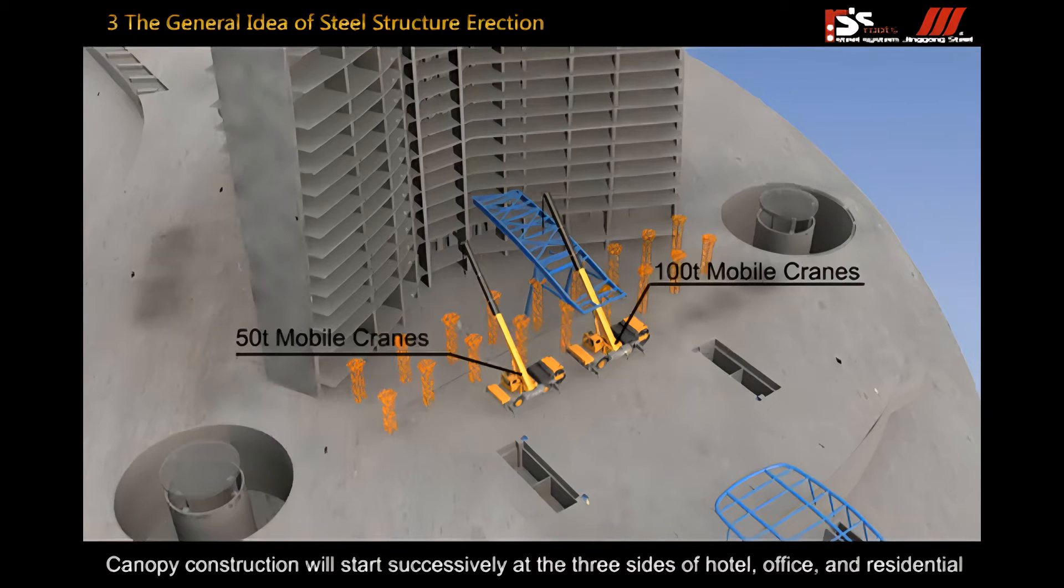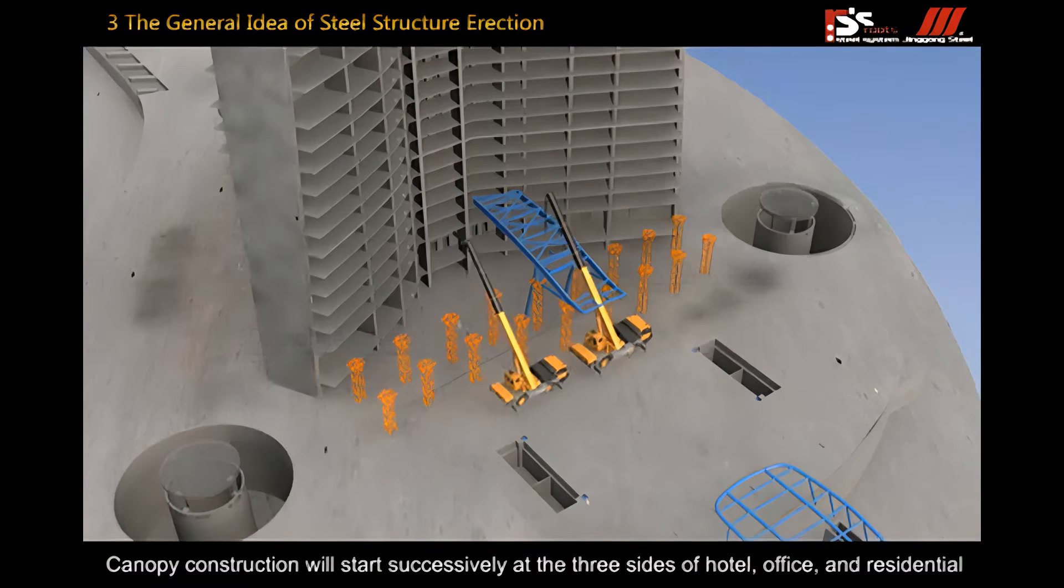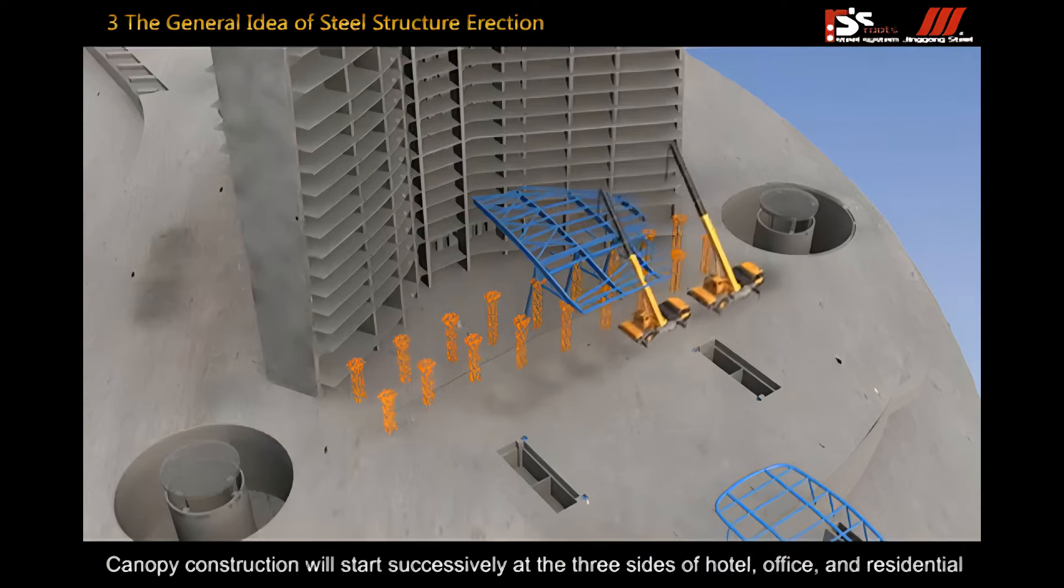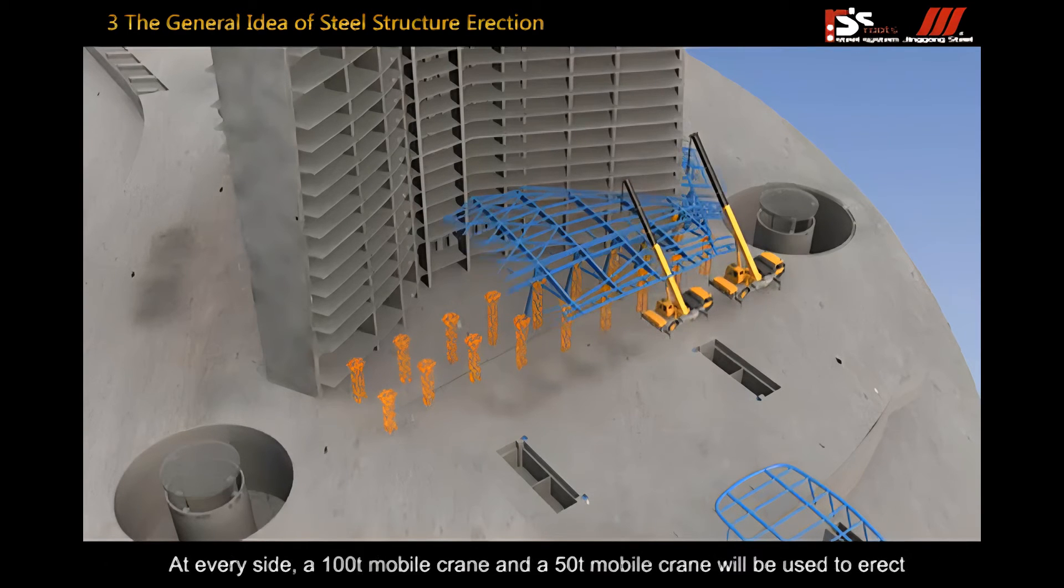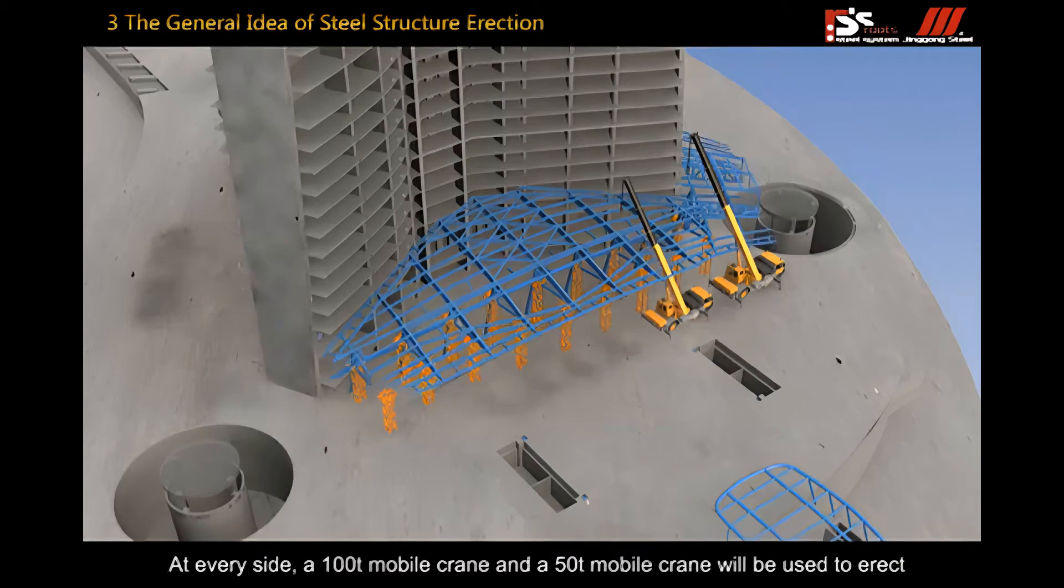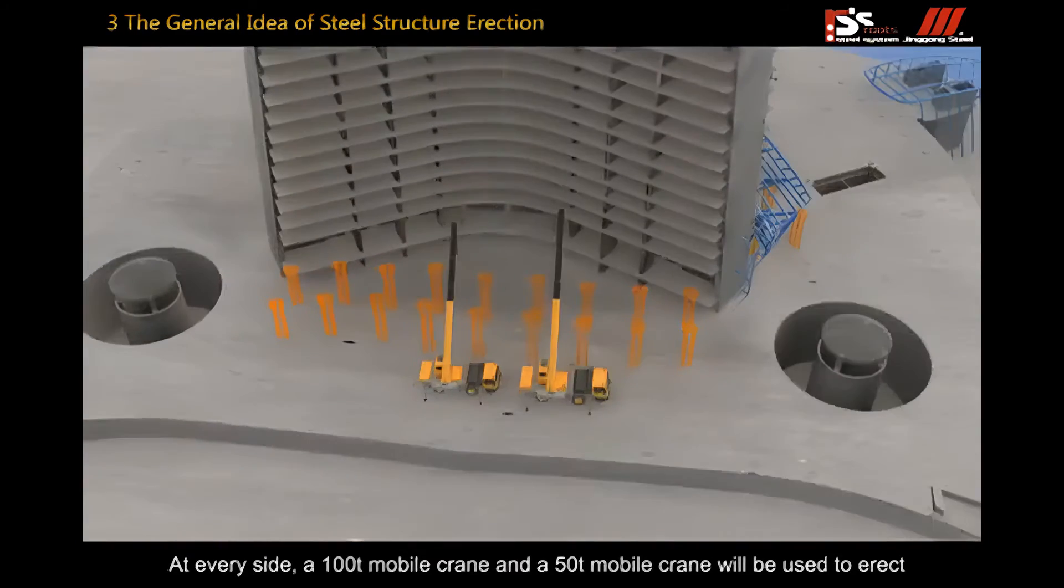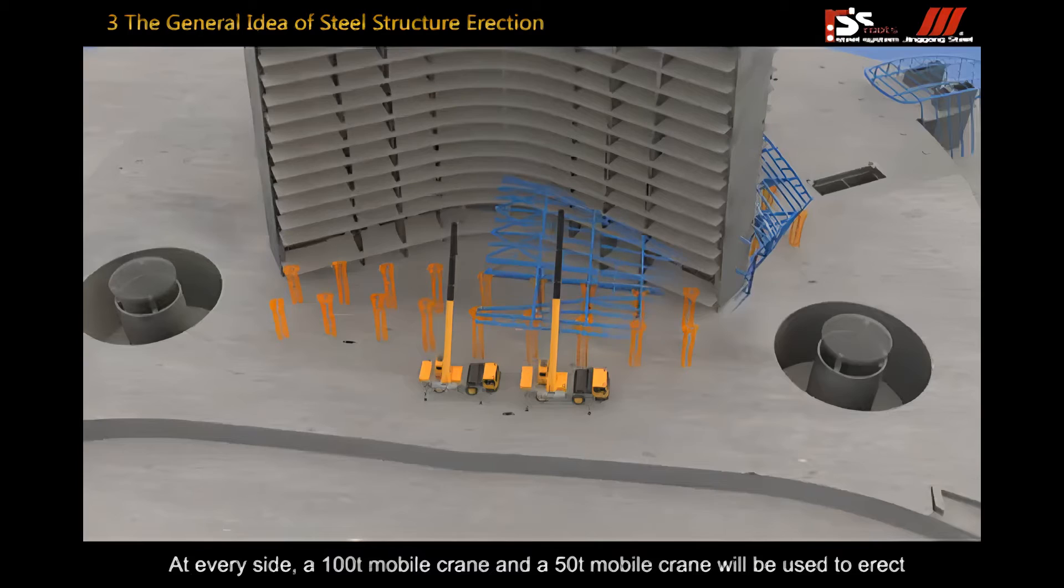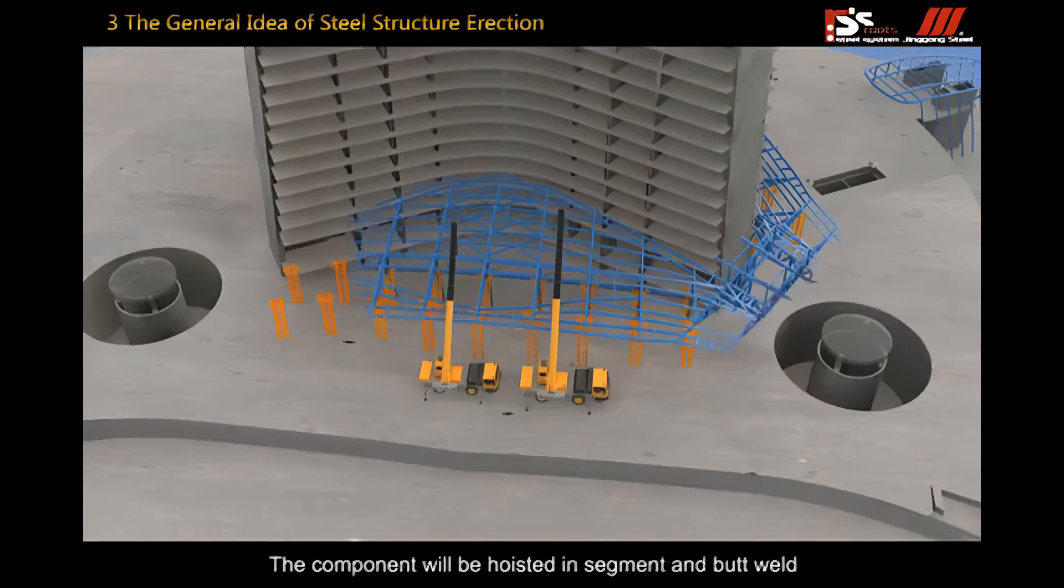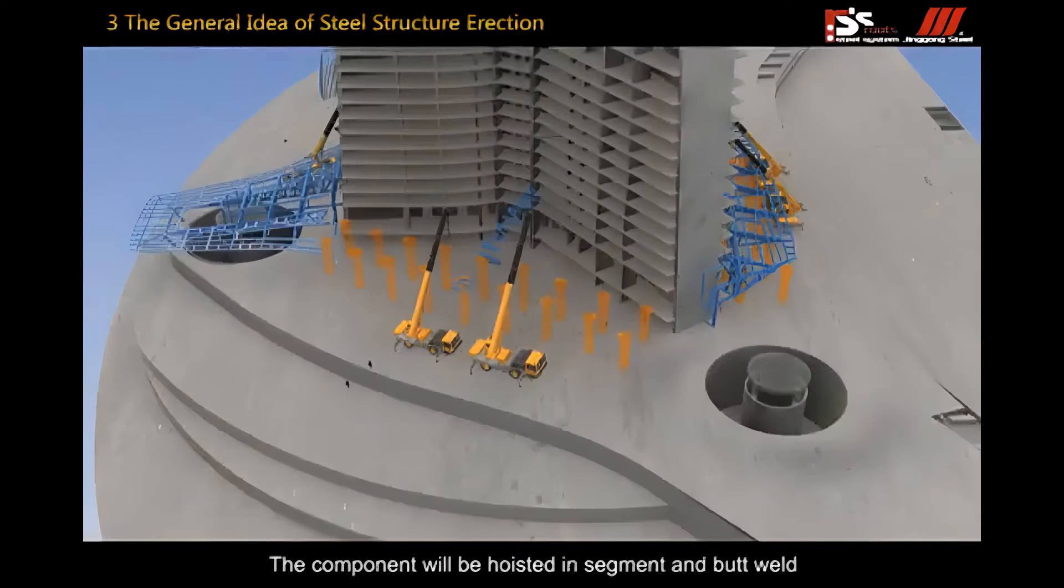Canopy construction will start successively at the three sides of hotel, office and residential. At every side, a 100 ton mobile crane and a 50 ton mobile crane will be used to erect the components. The components will be hoisted in segments and butt welded.